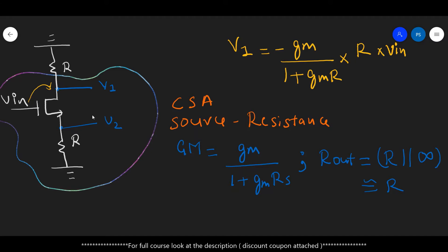The gm, because it is in a source degeneration format, is simply gm by 1 plus gm into Rs, where R is the resistance connected at the source. In our case, it is simply R. And what is the total Rout? The R is the parallel combination of resistance looking upward, which is R, in parallel with the resistance looking downward which is infinite. So the Rout is R parallel infinite, so it is purely R.